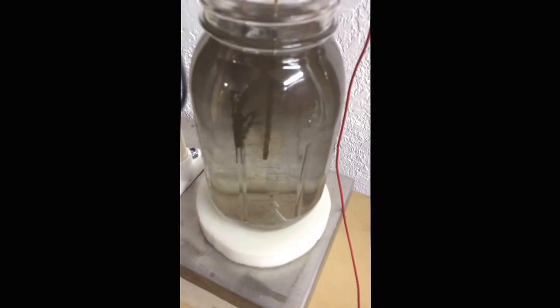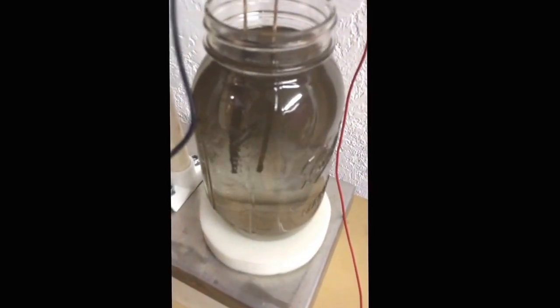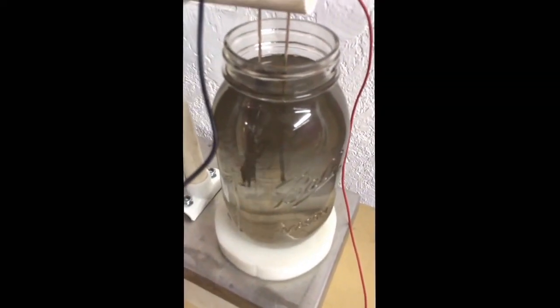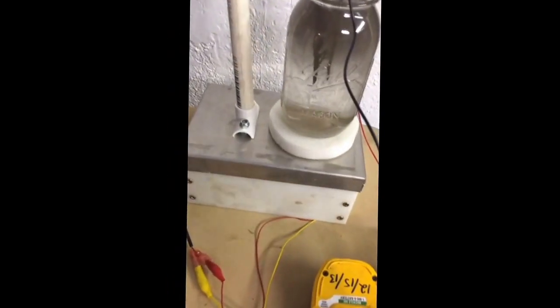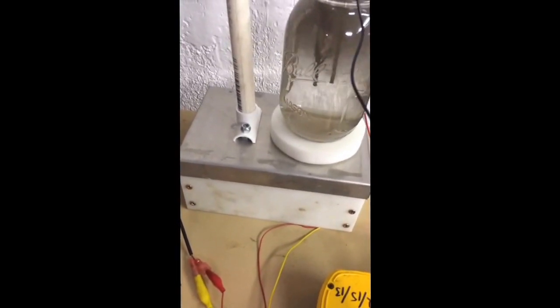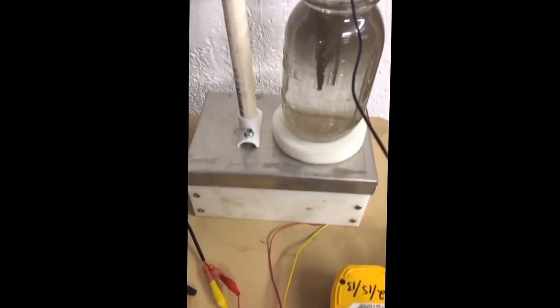But it's pure silver rods in a 32 ounce mason jar. And I've got a 1 RPM 12 volt auger motor. Well, it's a gear motor underneath there turning the jar.